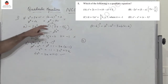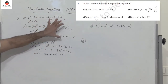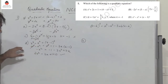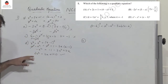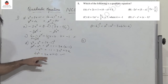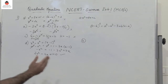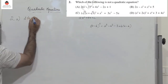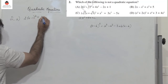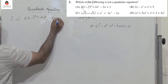Since options A, B, and C are not quadratic equations, you can directly choose D. So D is the right option for question 1. Now question 2: 2 into x minus 1, the whole square equals 4x squared minus 2x plus 1. Expanding the left side gives 2x squared minus 4x plus 2.